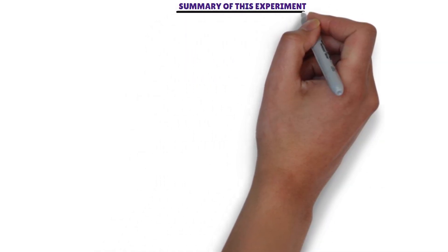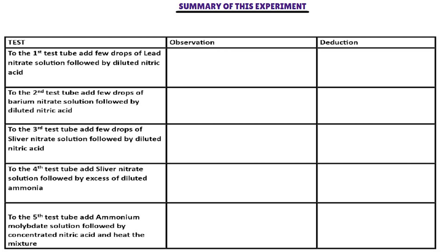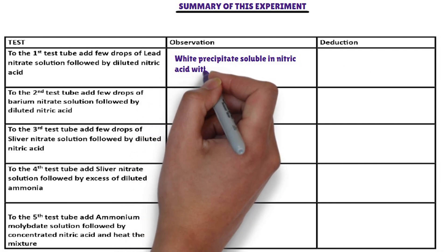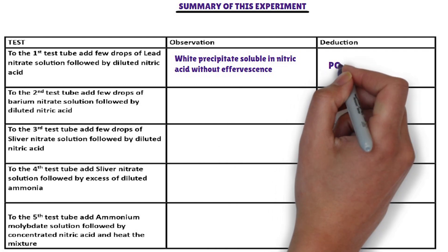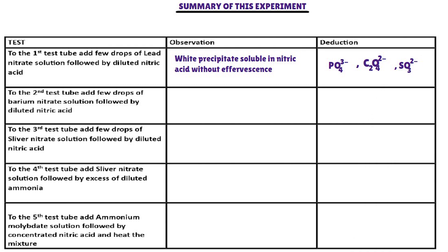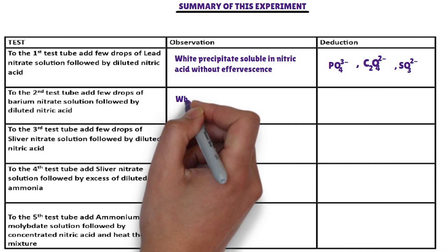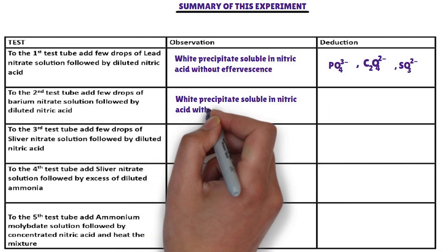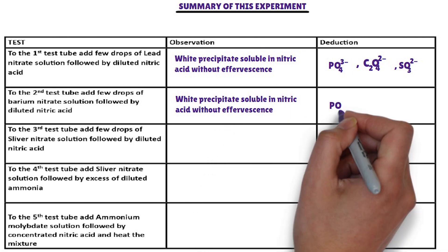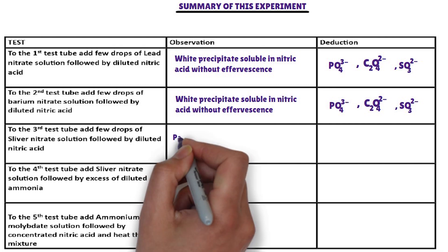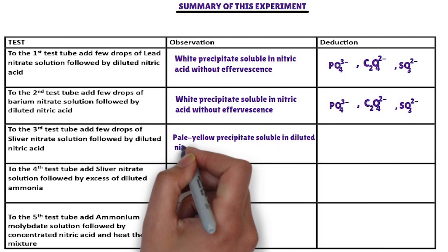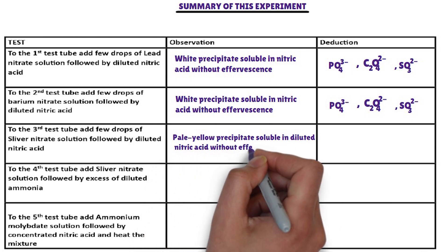Summary of this experiment. To the first test tube, lead nitrate solution is added followed by diluted nitric acid. The anions that form a white precipitate with lead nitrate, soluble in nitric acid without effervescence, are: phosphate ion, oxalate ion, and sulfite ion. To the second test tube, barium nitrate solution is added followed by nitric acid. The anions that react with barium nitrate to form a white precipitate soluble in nitric acid are: phosphate ion, oxalate ion, and sulfite ion. To the third test tube, silver nitrate solution is added followed by diluted nitric acid. The anion from the above list whose precipitate is soluble in nitric acid without effervescence is phosphate ion.